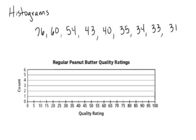76 is going to fall between 75 and 80, so I'm going to go ahead and bring that up to count number 1. Then 60 is going to go between 60 and 65. 54 is going to go between 50 and 55. And 43 would go between 40 and 45.